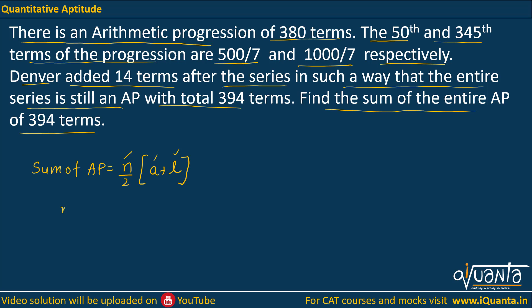Another formula that we use is n upon 2, 2a plus n minus 1 into d. This is when I have the first term, the common difference, and the number of terms. Basically, this formula is derived from the formula at the bottom only.